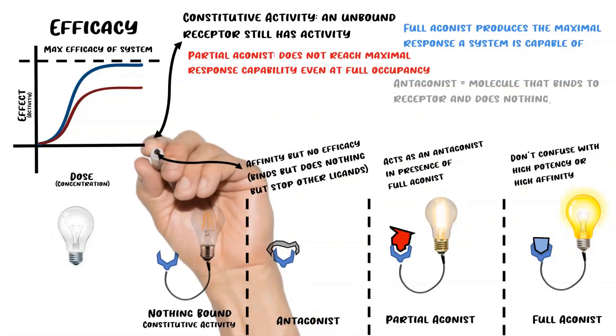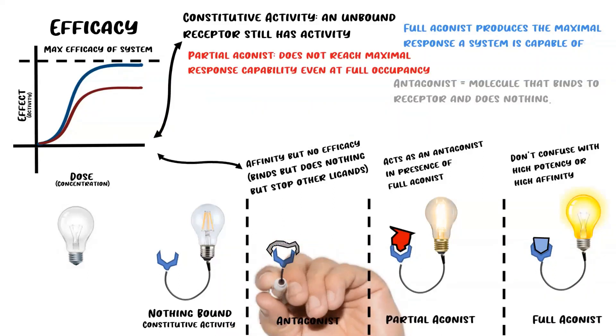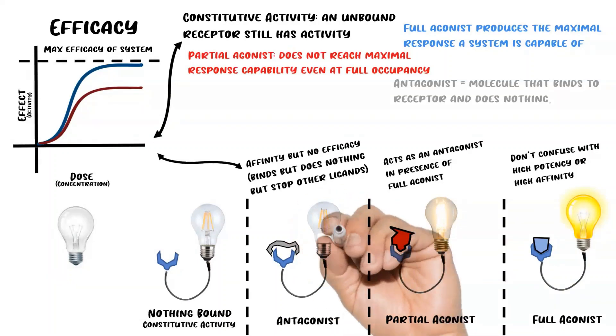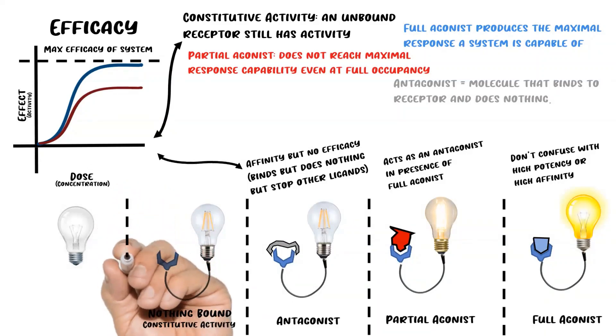When we hook our light bulb to it, we can see that it has the exact same amount of light emitting as when nothing's bound, or constitutive activity. Just to emphasize the point, an antagonist won't do anything if there's no other drugs or ligands available, but it has a negative effect when they are.